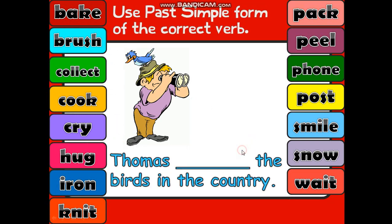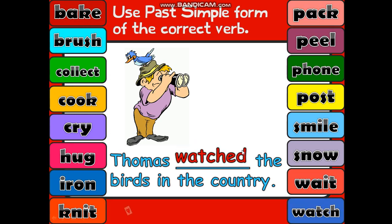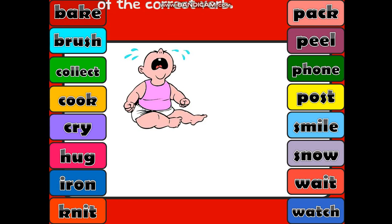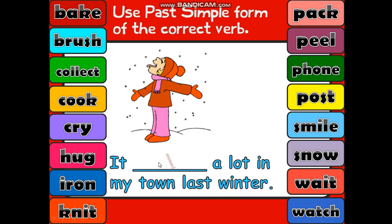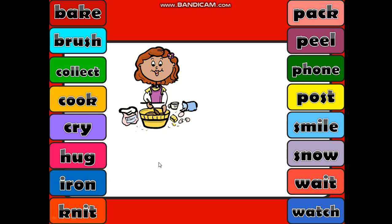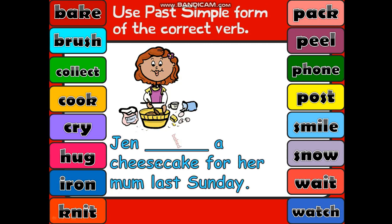What did Thomas do here? Thomas watched the birds. What did the baby do? Our neighbor's baby cried. You'll notice that 'cry' changed — because we had a consonant before the 'y', so we turned the 'y' into 'i' and added 'ed'. It snowed a lot in my town. Jen baked a cheesecake last Sunday.